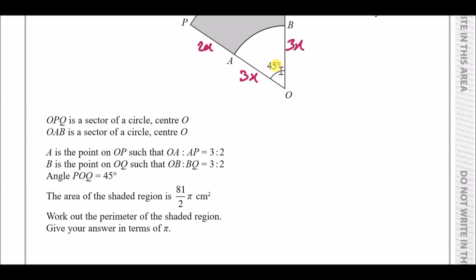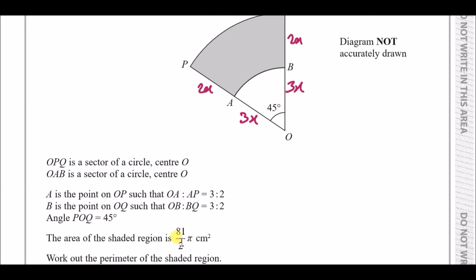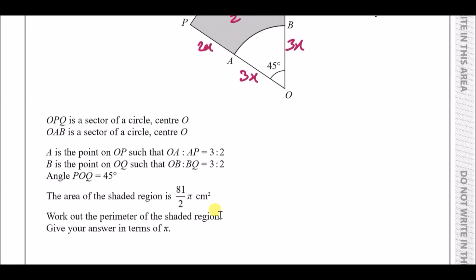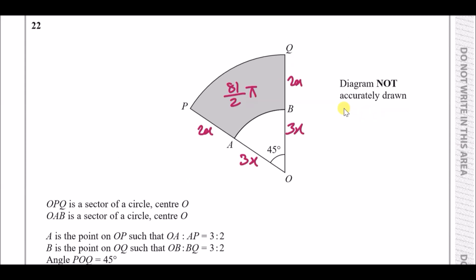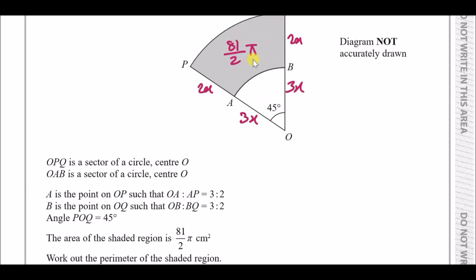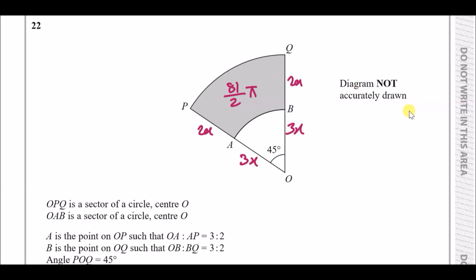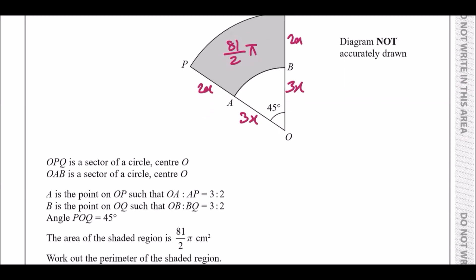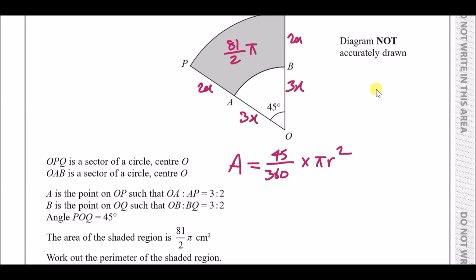Angle POQ is 45 degrees, and the area of the shaded region is 81 over 2 pi. We need to find the perimeter of the shaded region. First, let's find the true radius. The area of each sector is a fraction of 360 times pi r squared — call these Area 1 (small, radius 3x) and Area 2 (large, radius 5x).